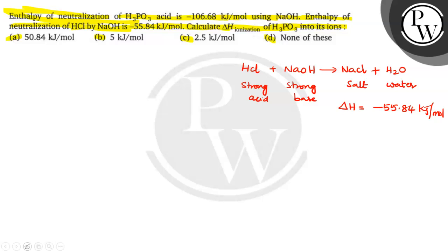Now, here HCl releases how many H plus ions? HCl releases 1 H plus ion. NaOH releases 1 OH minus ion and these two are combined and form 1 mole of water. And this is also the same delta H of neutralization that is minus 55.84 kilojoules per mole.